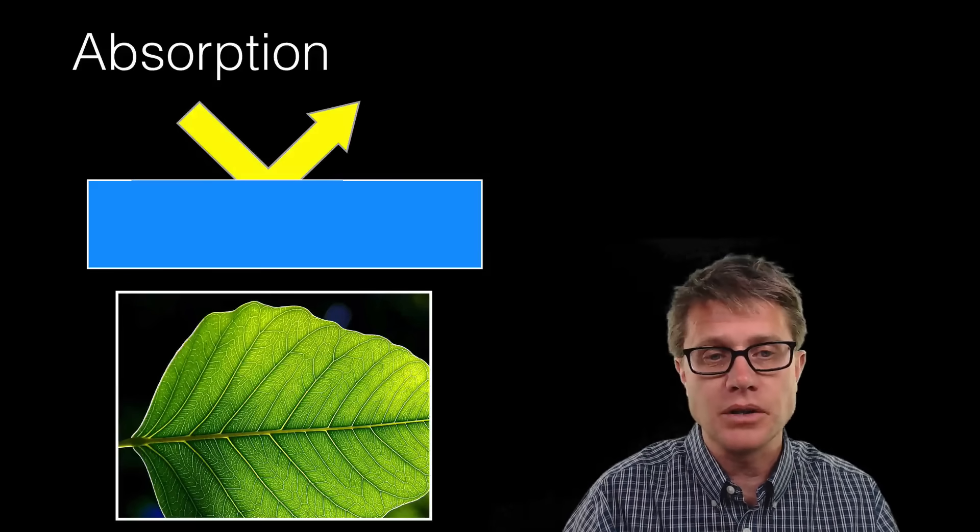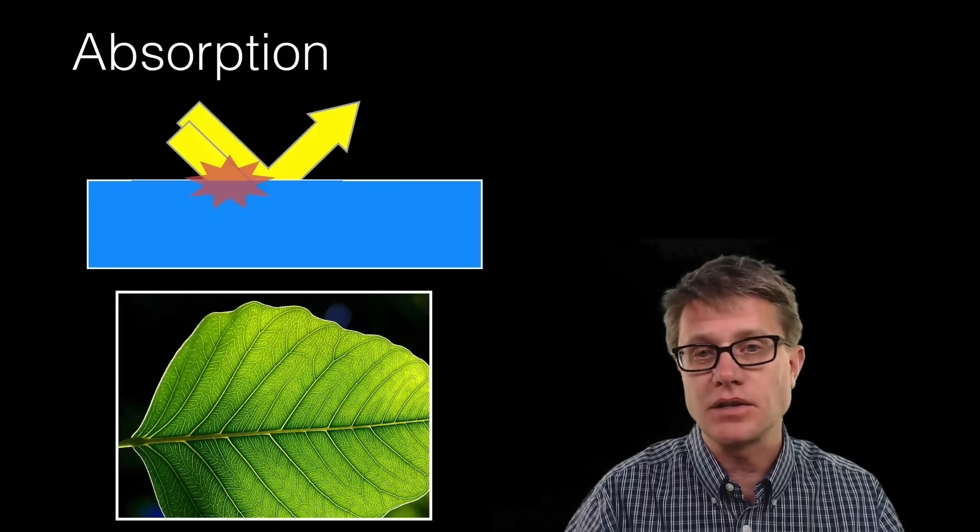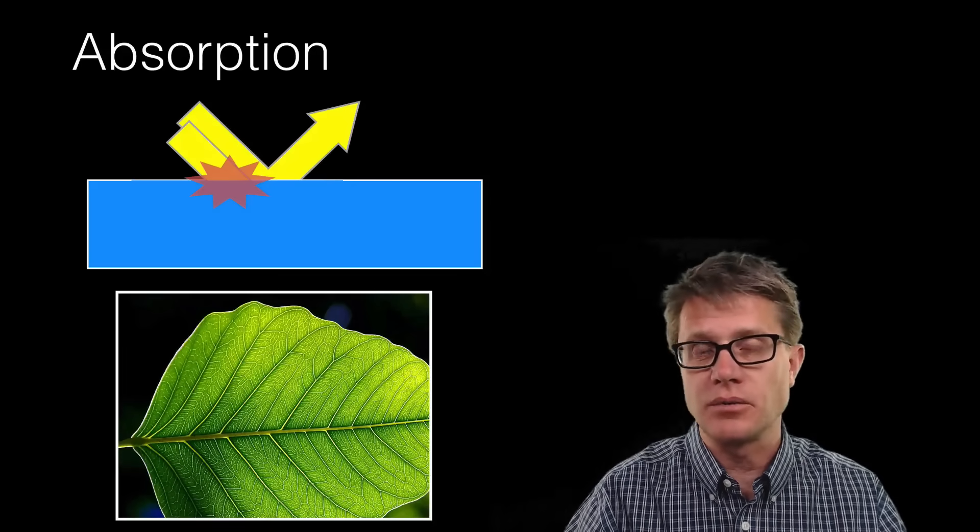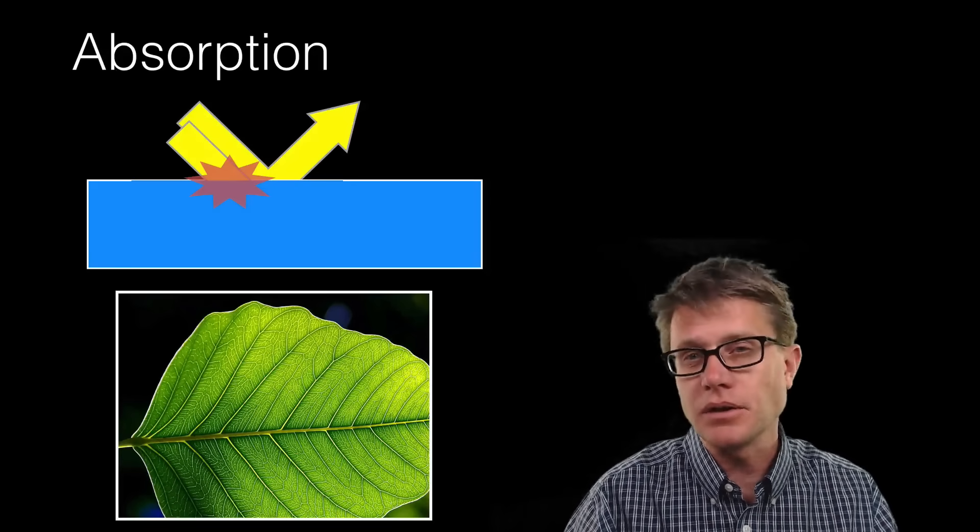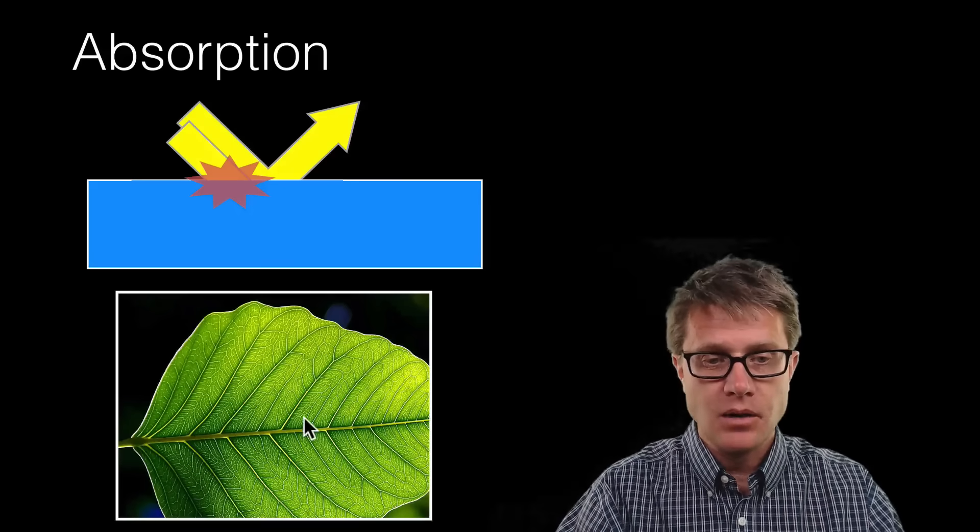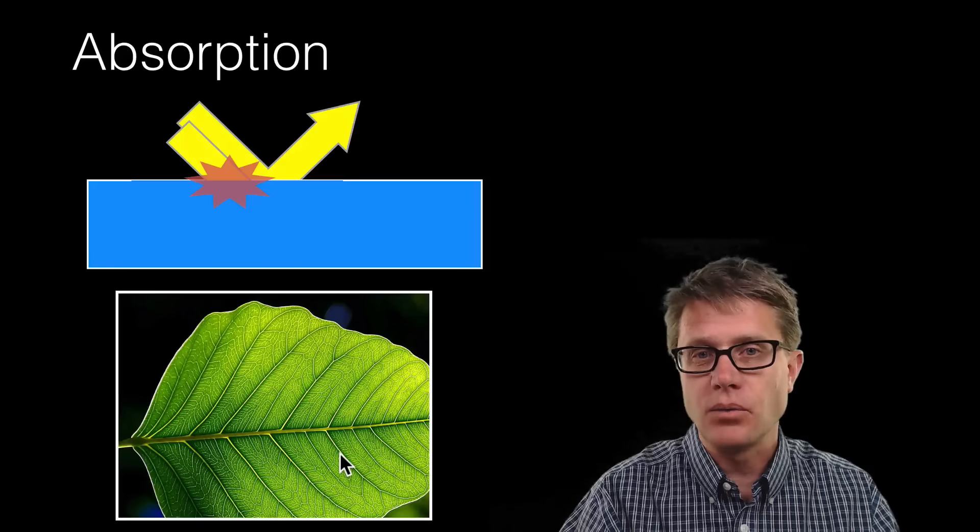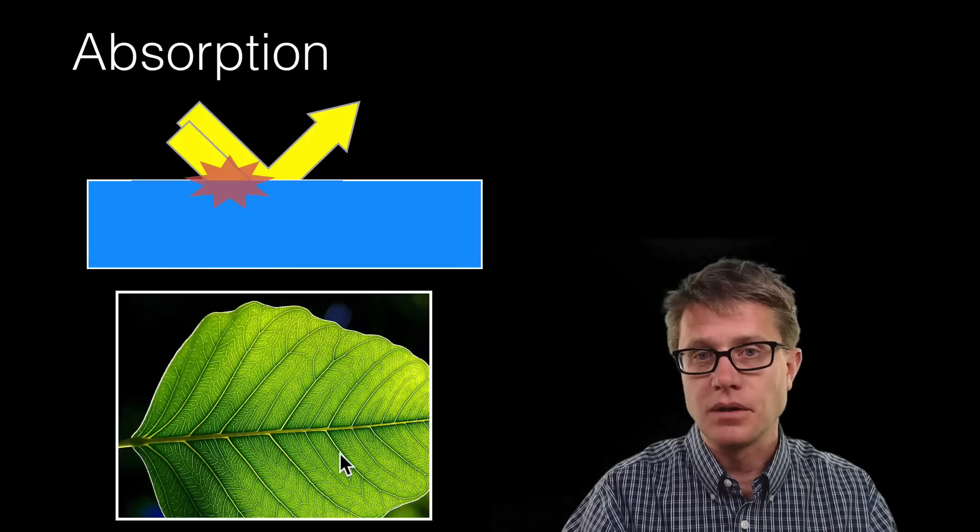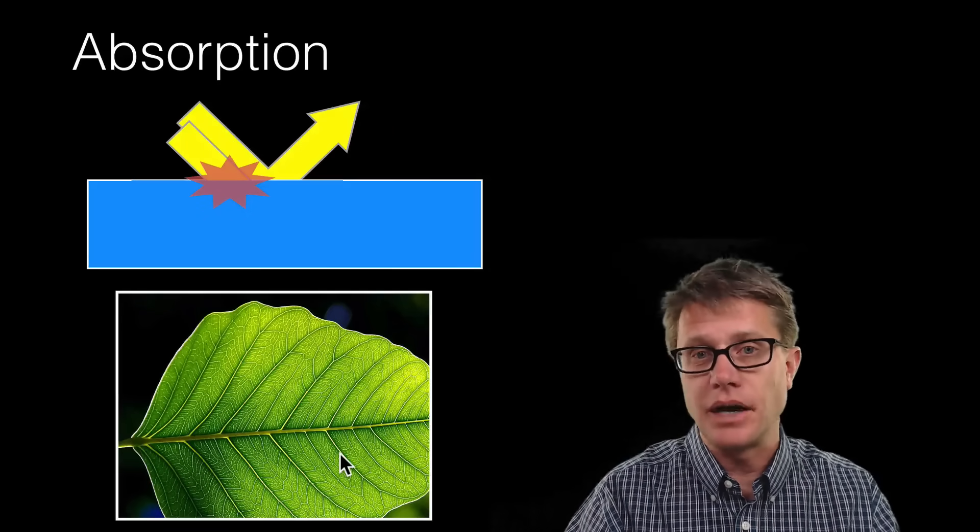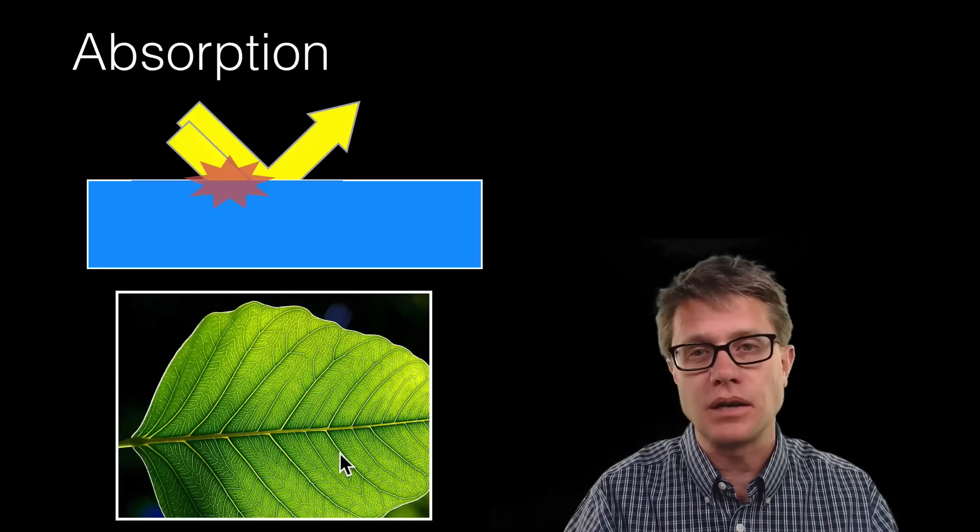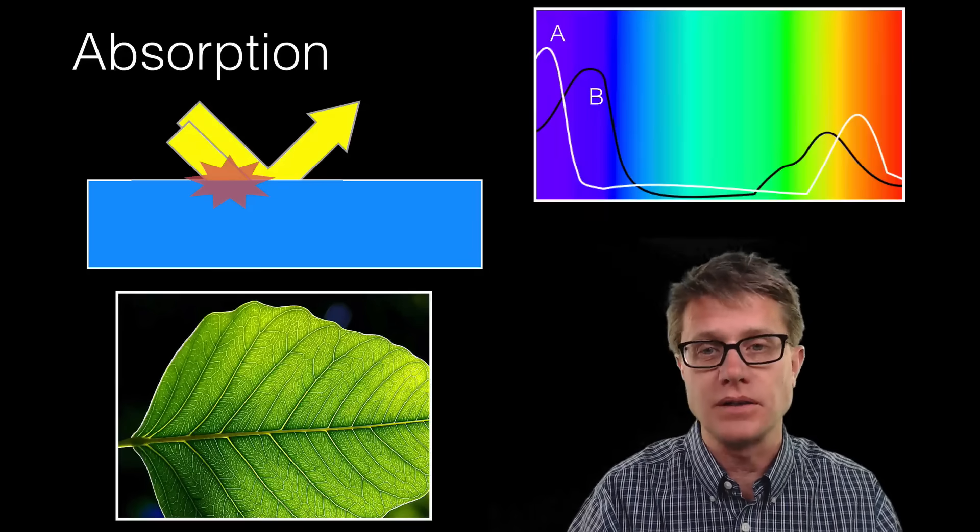Absorption is different. Absorption is when the light hits the surface and is converted into some other form of energy. Generally it's going to be heat. If we were to look at this leaf, for example, what light is being reflected? It's going to be the green light. And so what light is going to be absorbed? It's going to be the red light and the blue light that is being absorbed.